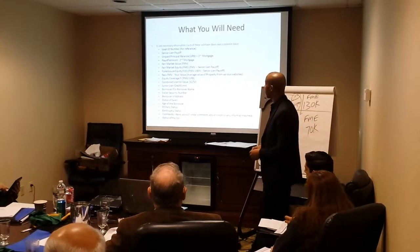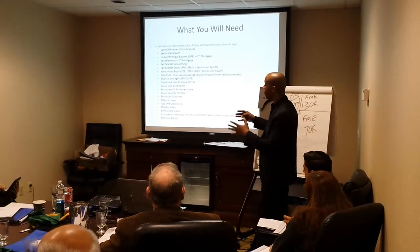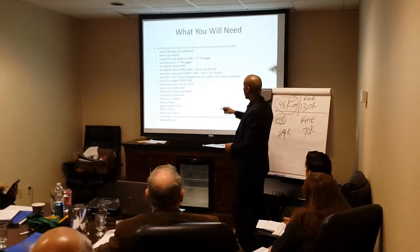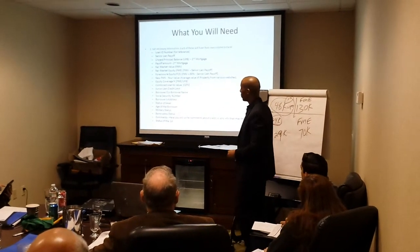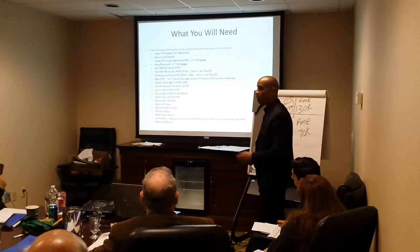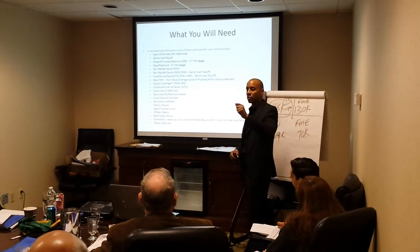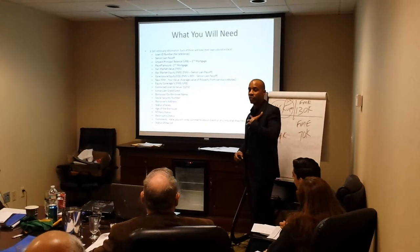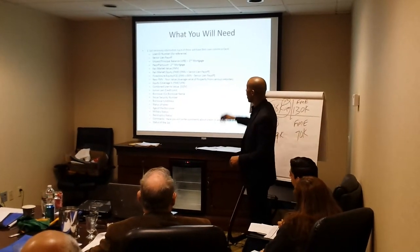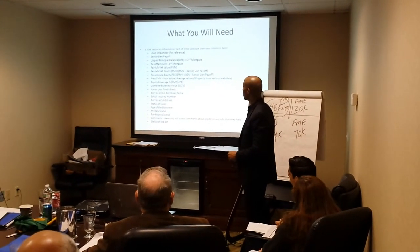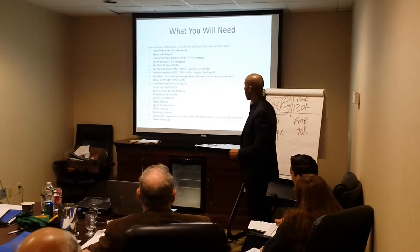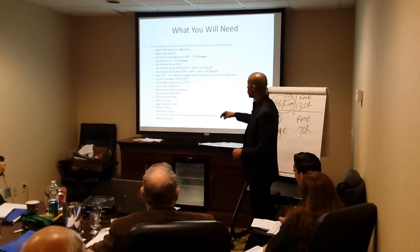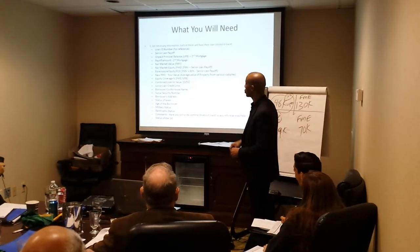I minus the senior lead payoff and that gives me my foreclosure equity. I do that from the new fair market value — not the seller's fair market value. Once I triangulate the value and use the law of averages to get that new fair market value that I trust and verify, I will subtract the senior payoff from that, or do 80% of that.